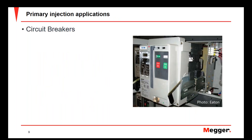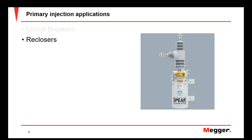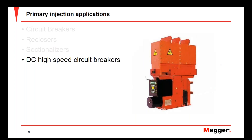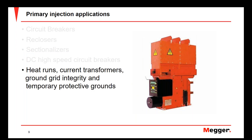Whenever we do this type of test, we drive current through a closed circuit breaker through the main contacts and verify that the overcurrent function is going to react as intended — tripping whenever we push current through the breaker. Primary injection applies to circuit breakers, but also to reclosers, sectionalizers that have overcurrent functions, DC high-speed circuit breakers, as well as heat runs, testing current transformers, verifying the integrity of ground grids, and testing personal protective grounds.